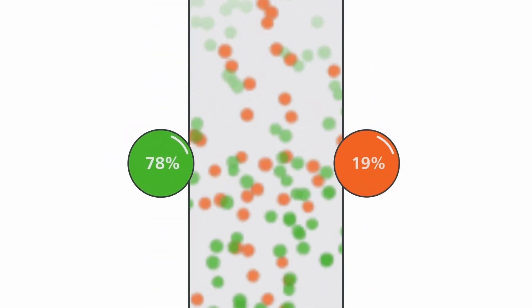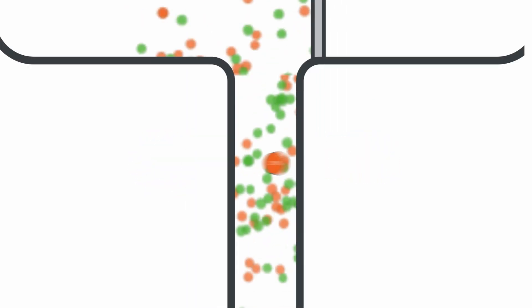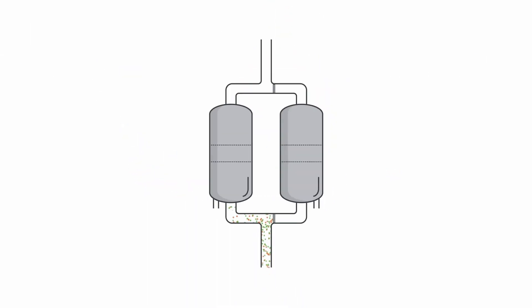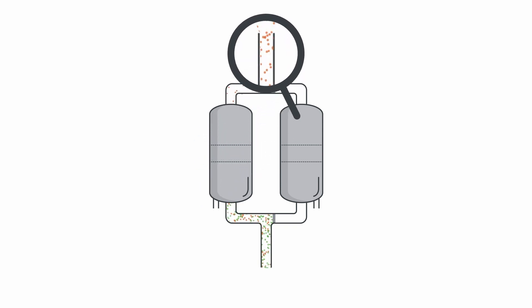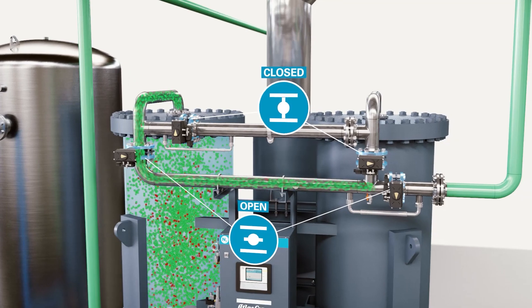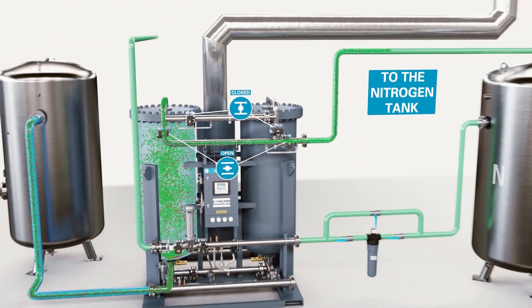Here is how it works. A compressor generates air, which consists of 78% nitrogen and 21% oxygen, to a PSA gas generator. There, the molecules of gas you do not want attach themselves to an adsorbing material, so that only the gas you do want comes out at the end.